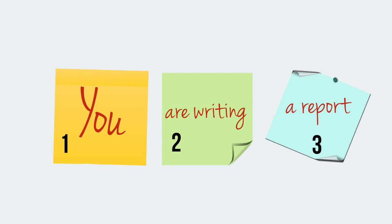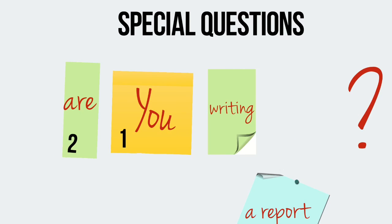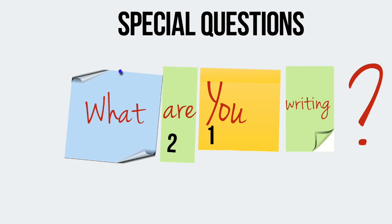You are writing a report. This is a standard present continuous sentence. Let's see how we make a special question. Now this is a special question: What are you writing? We just put the verb TO BE before the subject, before number one, and a question word before TO BE. What are you writing?